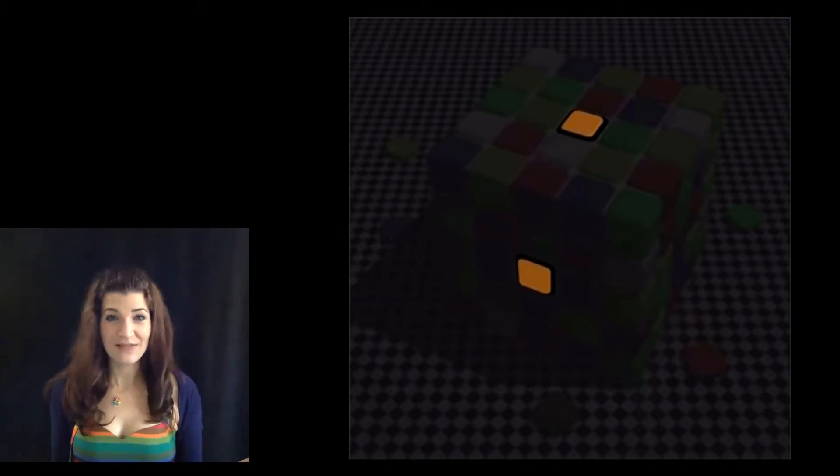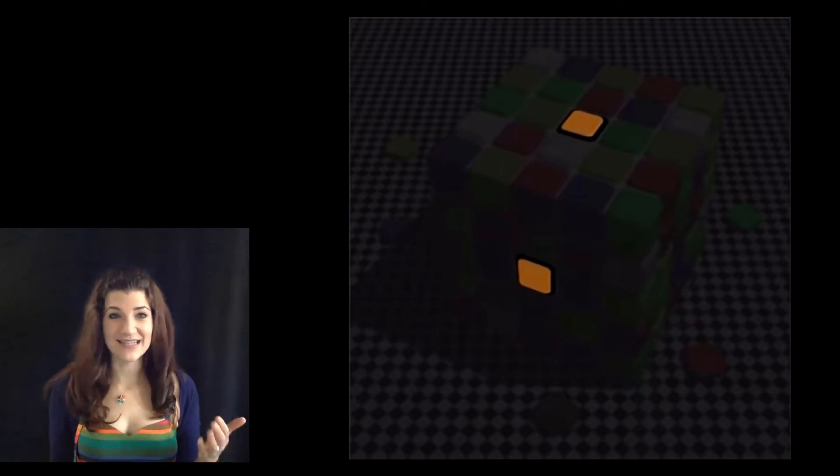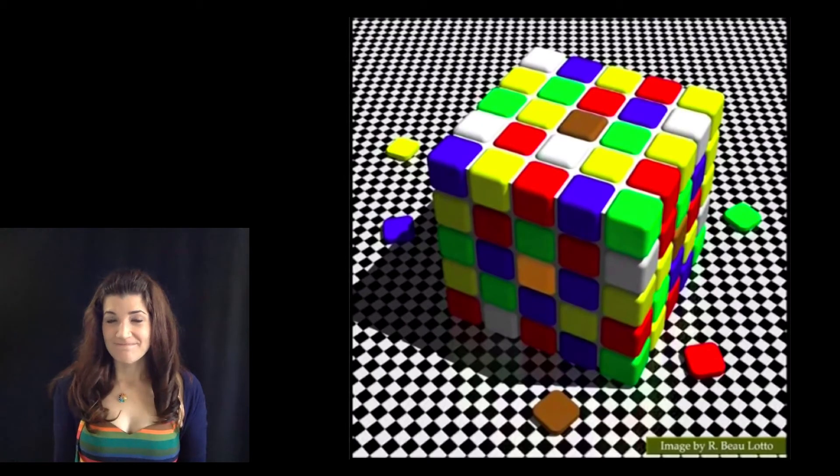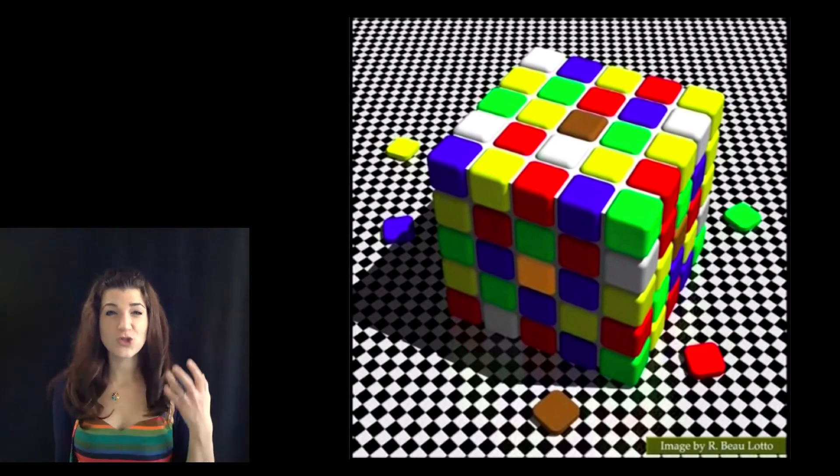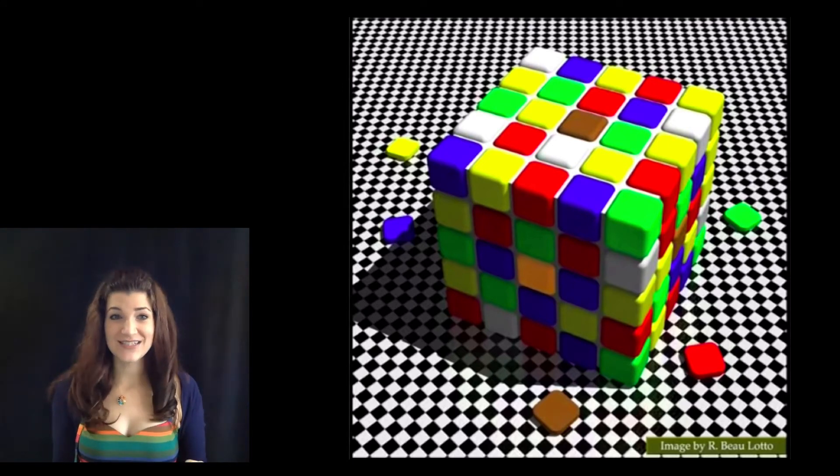They're reflecting the same wavelengths of light. They are what we would call the same color. So why do we see them differently? It has to do with the inferences we're making. We assume that the one on top is brightly illuminated and the one on the side is in shadow. So we interpret the true color, what's actually out there. We make different guesses about the nature of the distal stimuli.